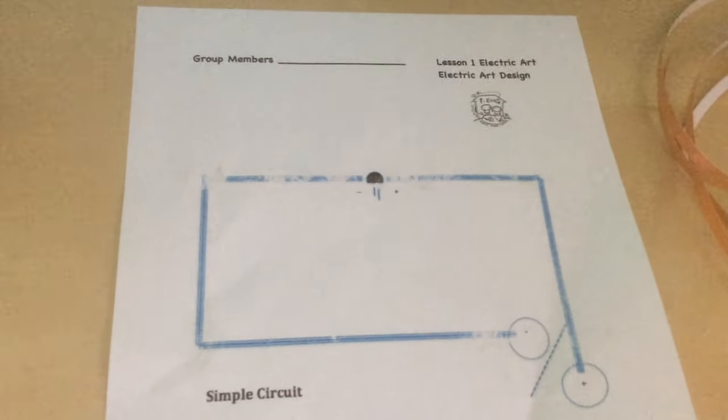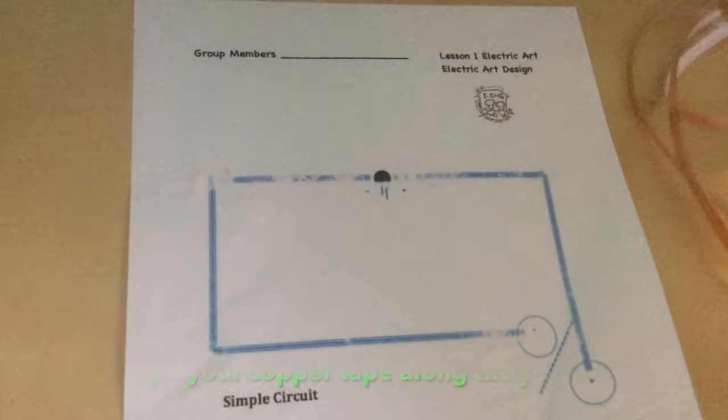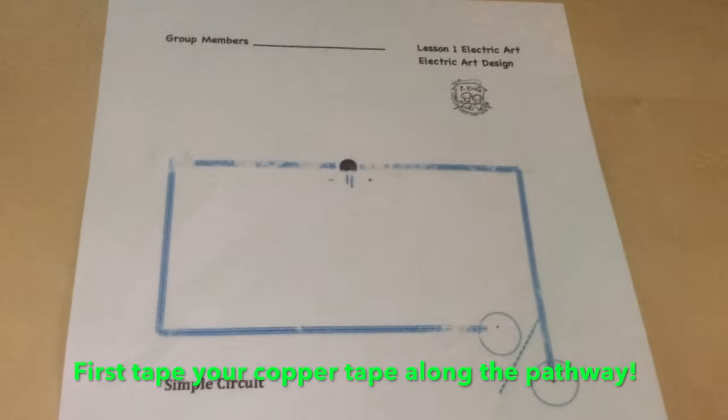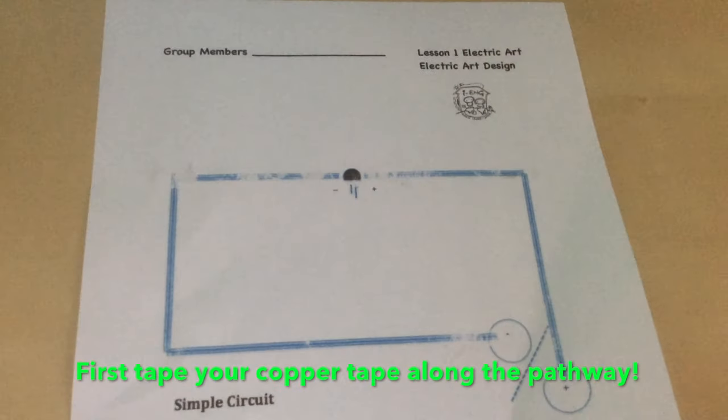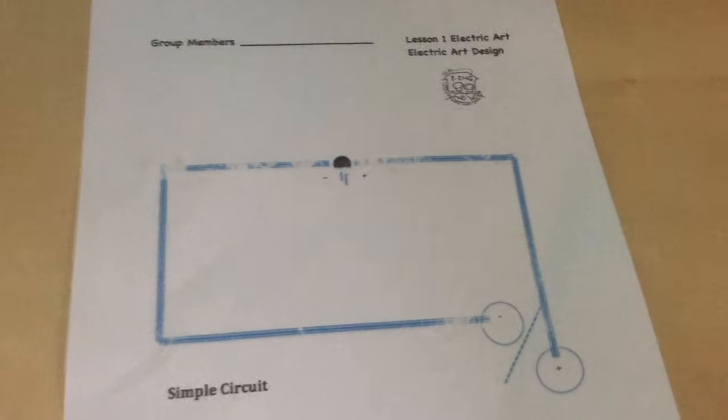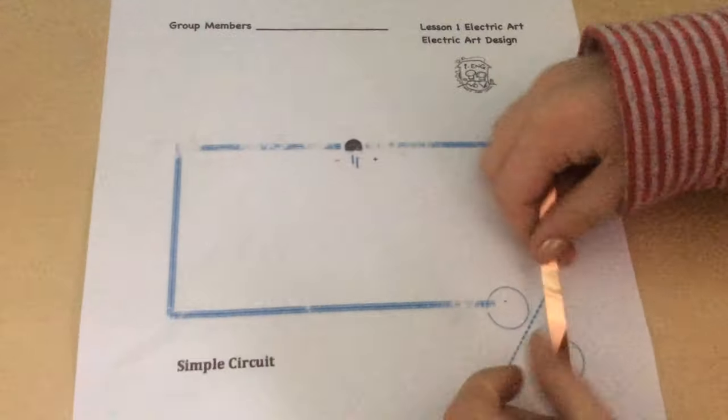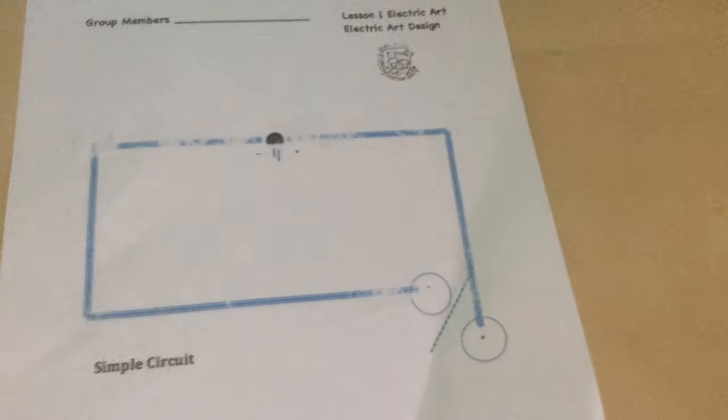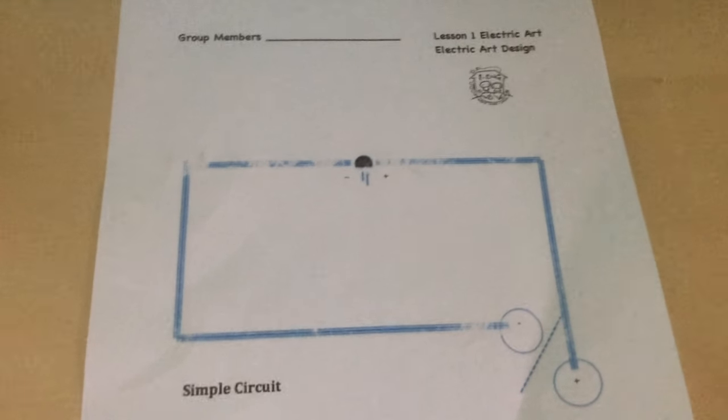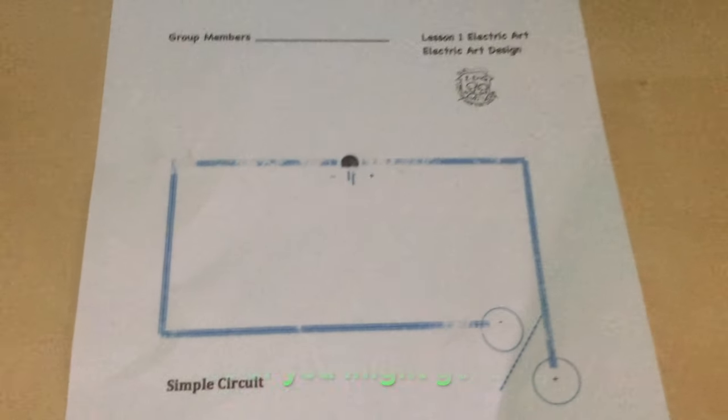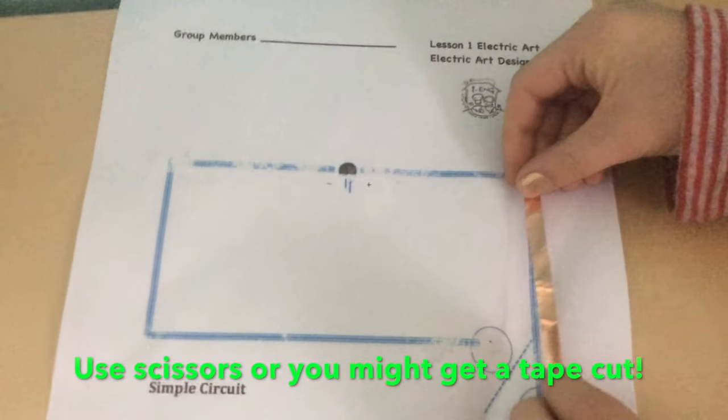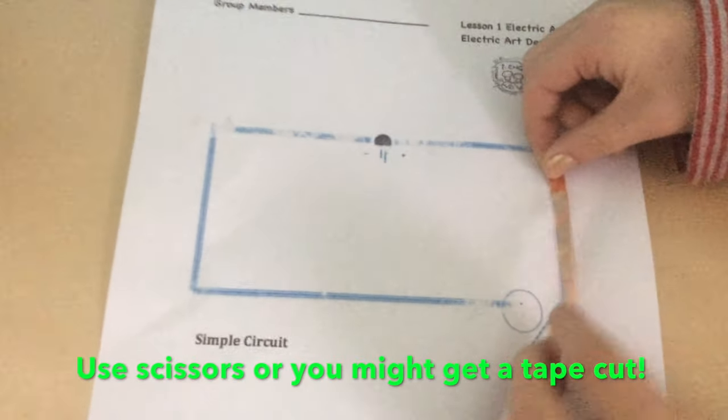Okay, so the first thing you're going to want to do is take your copper tape and tape all around the sketch thing, the lines where it says to tape it. And when you're cutting it with scissors, you should cut it with scissors and not rip it with your hand because if you rip it with your hand you could get little tiny splinters from the copper tape and that doesn't feel good.